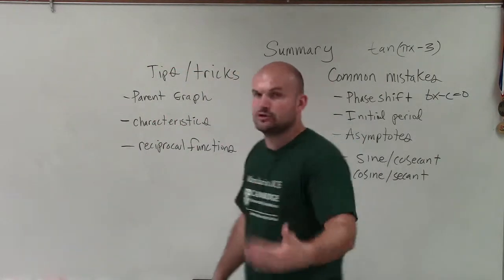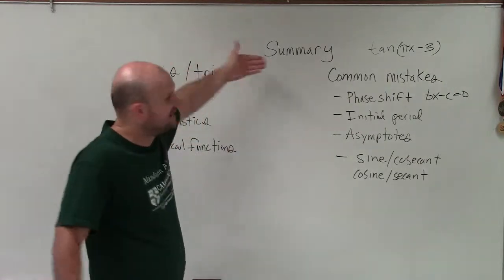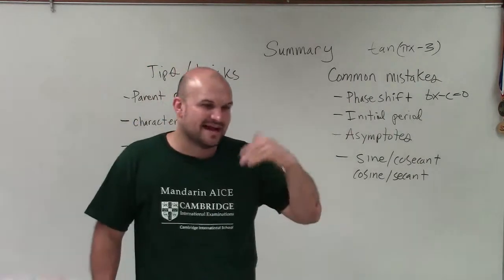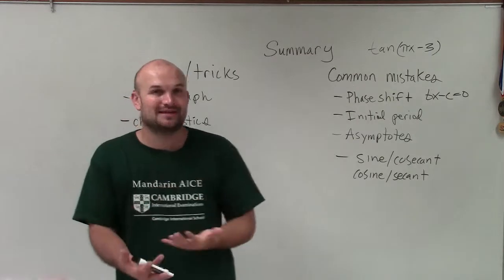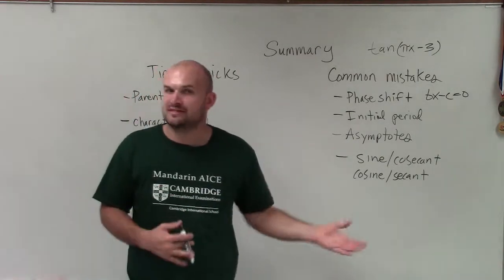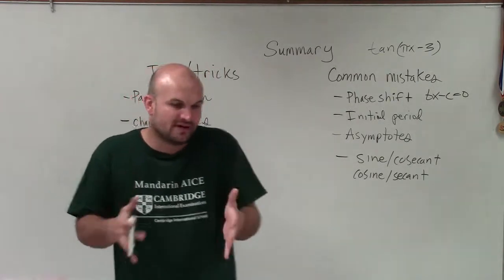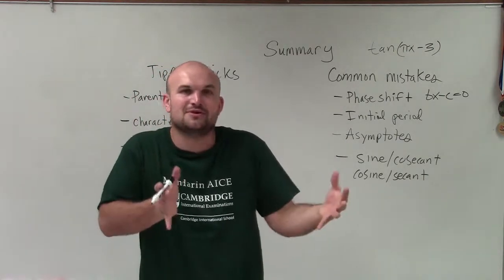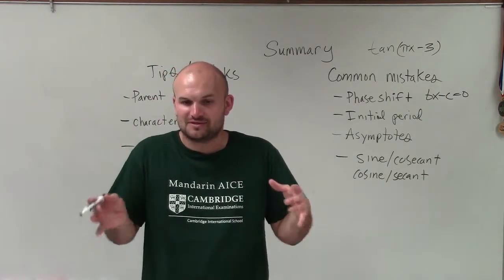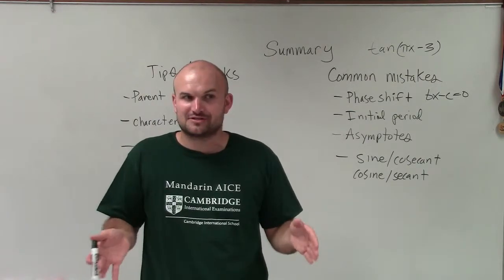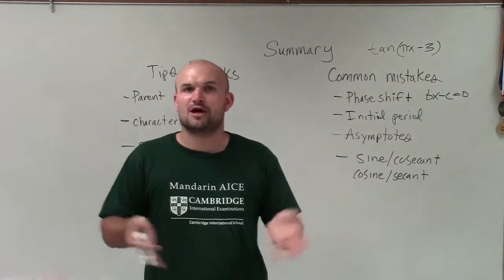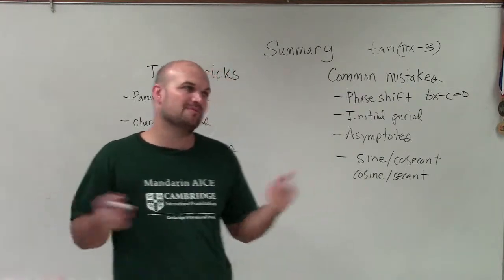The last key point is knowing the reciprocal functions. You cannot graph secant and cosecant well — at least not manually — without understanding the sine and cosine graph. Once you graph sine or cosine, you just make asymptotes at the x-intercepts and draw parabolas at the maxima and minima approaching the asymptotes, and you're pretty much done.